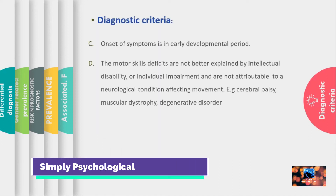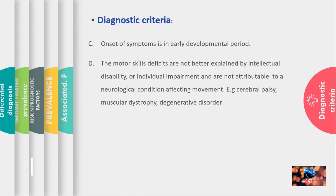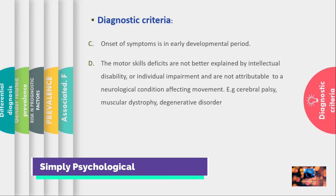Criterion C: onset of symptoms occurs in the early developmental period. Criterion D: motor skill deficits are not better explained by any other disorder, such as intellectual disability, visual impairment, or neurological conditions that affect movement, such as muscular dystrophy, degenerative disorder, or cerebral palsy.